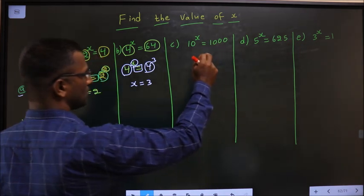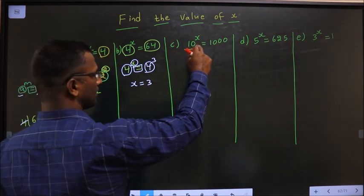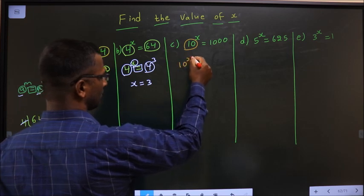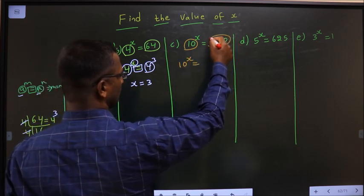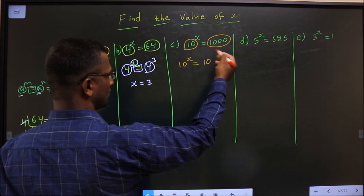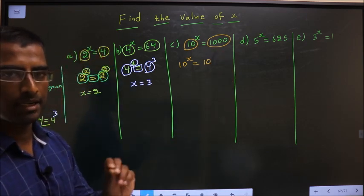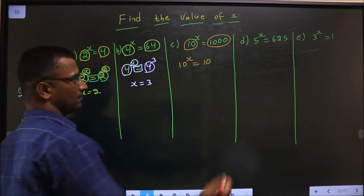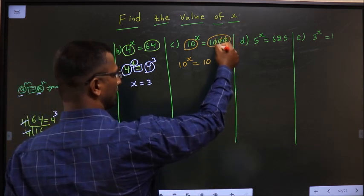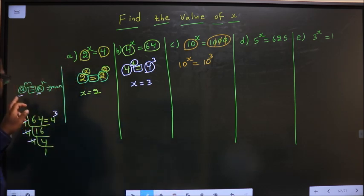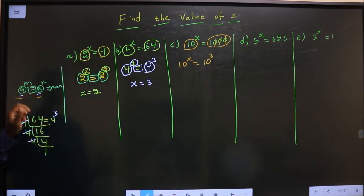Next problem: 10 power x equal to 1000. The observation is base is 10. So write 1000 also as 10 power something. The power is decided by the number of zeros present: 1, 2, 3 — so 10 power 3. Now apply the same rule: a power m equal to a power n, so equate the powers. x equal to 3.